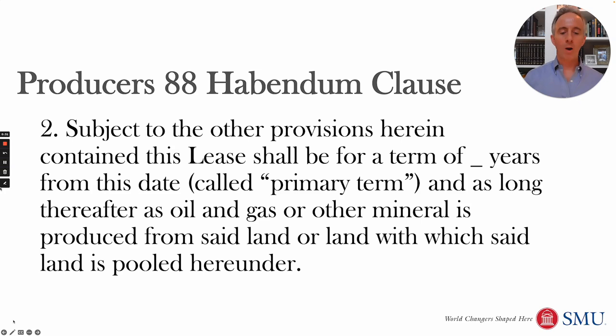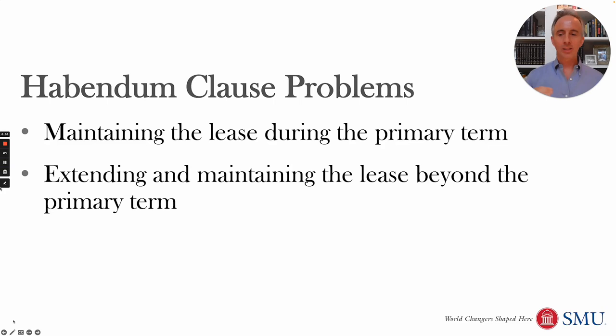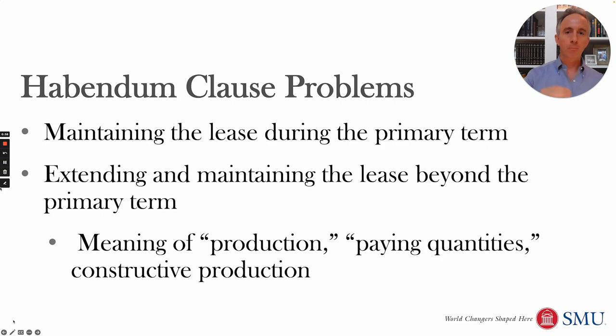You have to have enough oil and gas being produced on that lease that it's in paying quantities. We'll see the different ways that is defined by the courts and consider what it takes to maintain the lease during the secondary term. Last time we looked at the primary term; now we'll talk about the secondary term, what it means to have production, production in paying quantities, and in future classes we'll consider constructive production — situations where something else is construed as production.